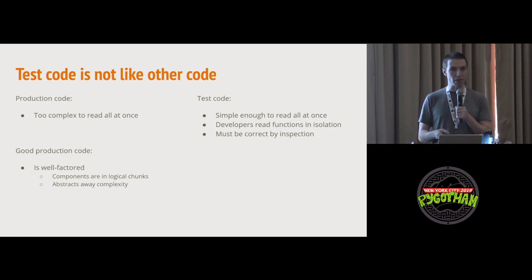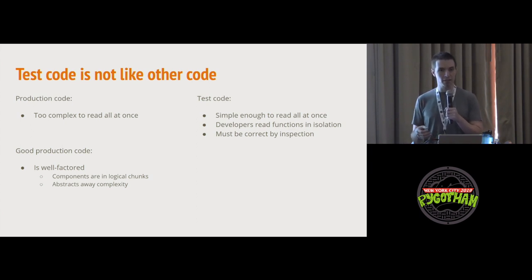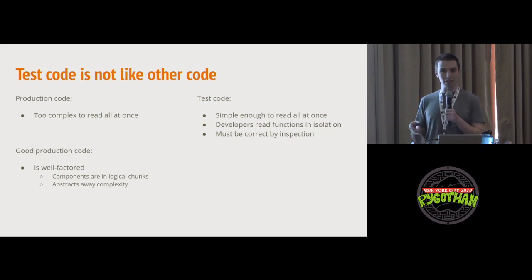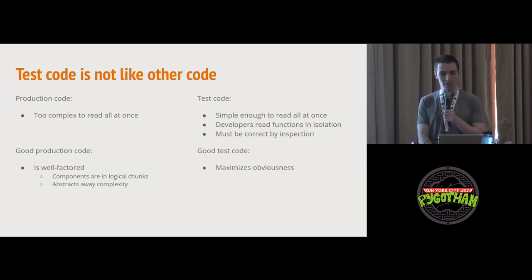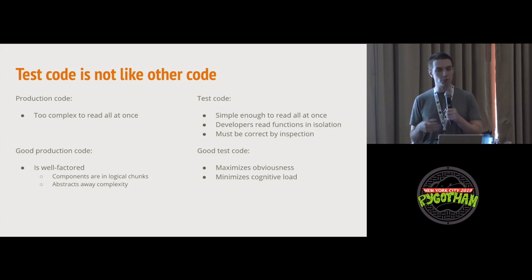Tests must be correct by inspection. Part of the reason we have confidence in production code is that we have tests that exercise it and tell us the behavior is correct. With test code, we have no tests for our test code — if we did, it would just be turtles all the way down, an infinite regression. The thing keeping tests correct is our ability to simply reason about them. Good test code maximizes obviousness and minimizes complexity, because the more indirection and logic we push into tests, the harder it is for a reader to verify correctness by inspection.